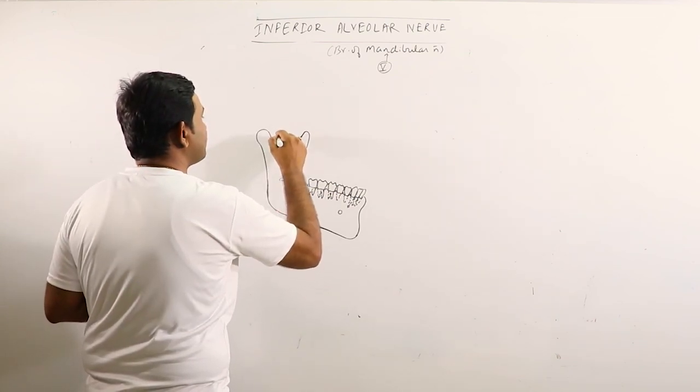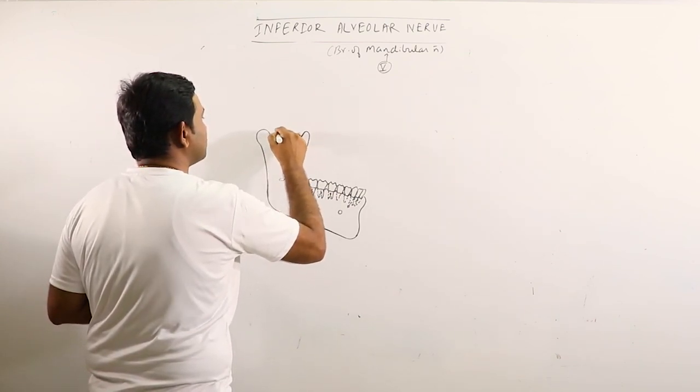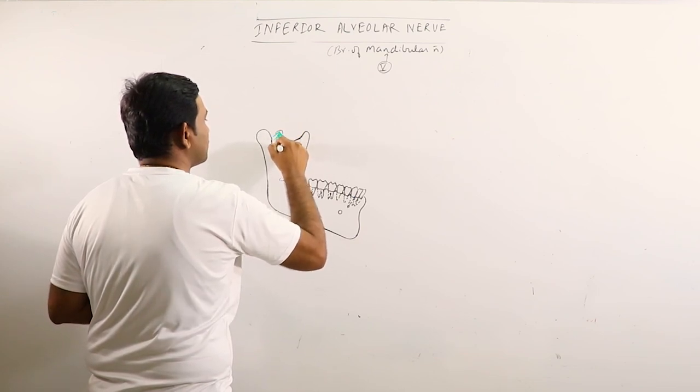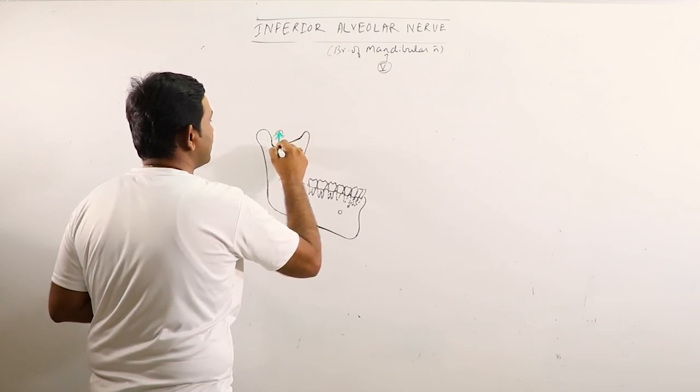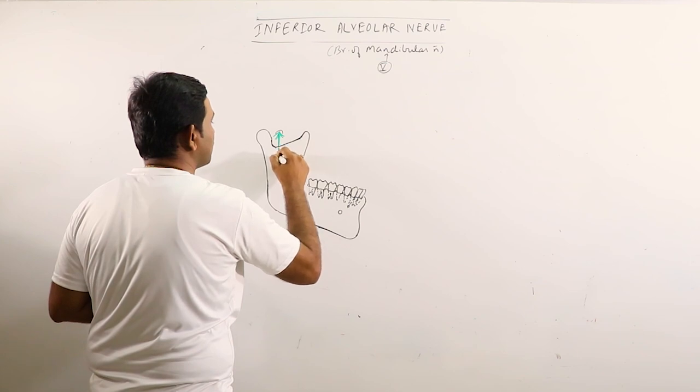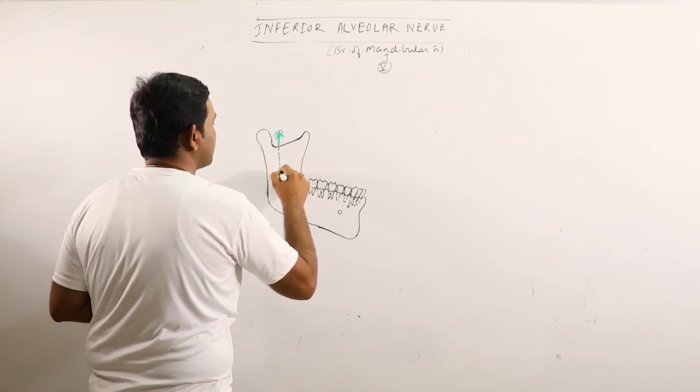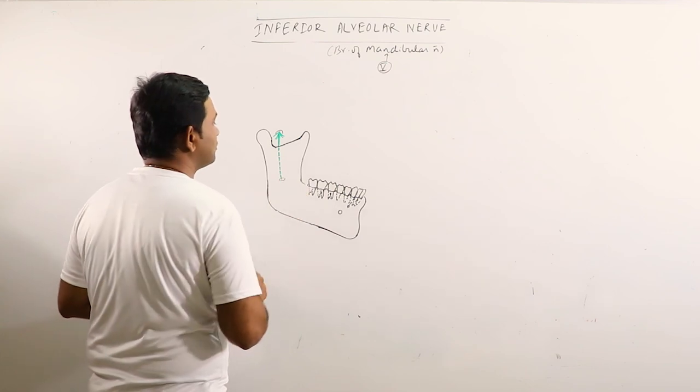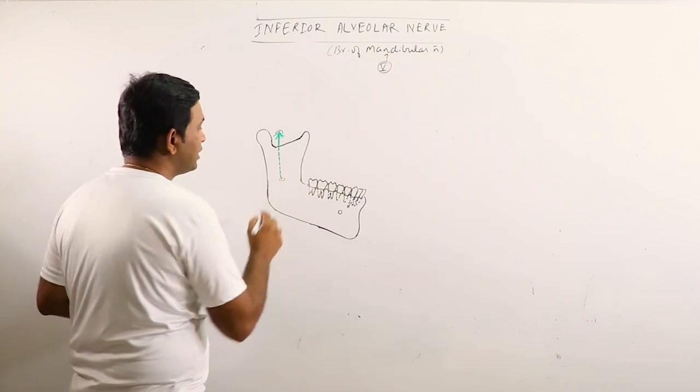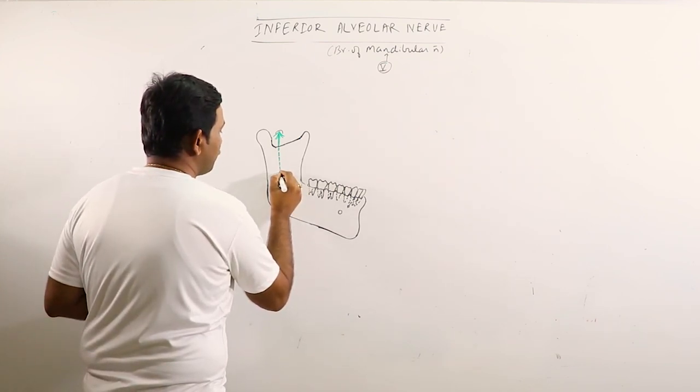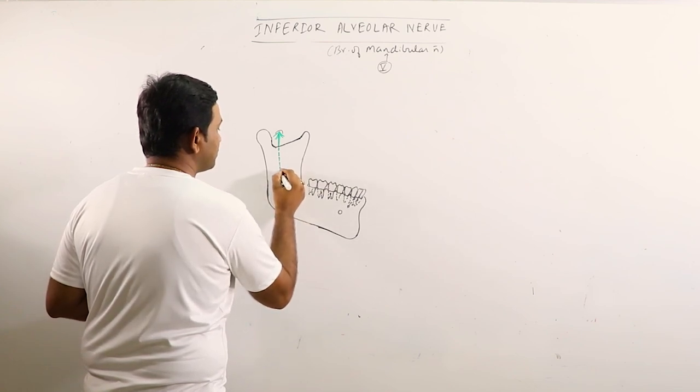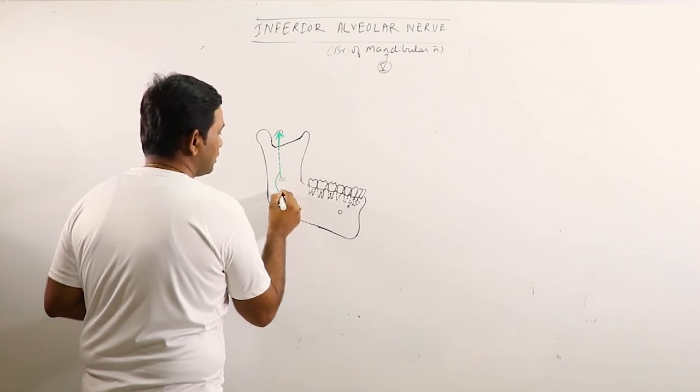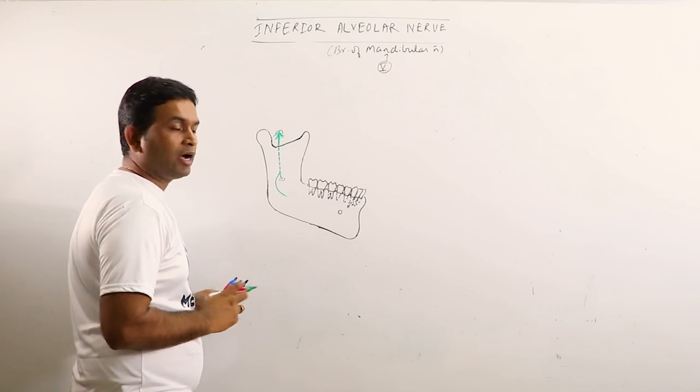Now, immediately after branching off from the mandibular nerve, the inferior alveolar nerve runs vertically downward and enters the mandibular foramen. Before entering the mandibular foramen, it gives a branch that is the mylohyoid nerve.